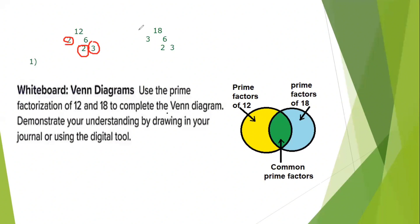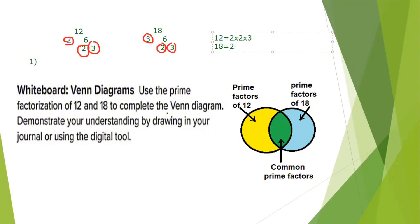Now let's write all of these numbers together to get the common prime factors between 12 and 18. For 12: I multiply 2 times 2 times 3. For 18: I multiply 3 times 2 times 3. Aligning them, I have 2 and 2 — these are common, so I take one 2. I also have 3 and 3 — these are common, so I take one 3. The remaining numbers have no common match.